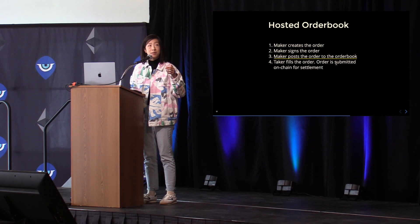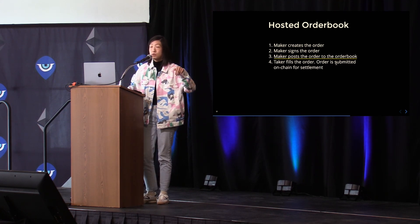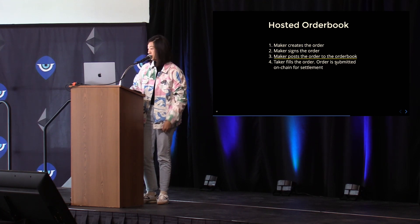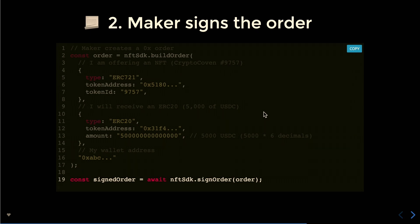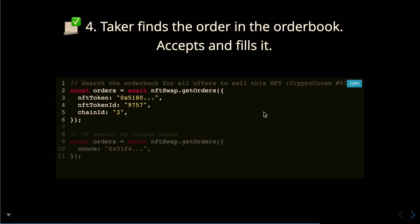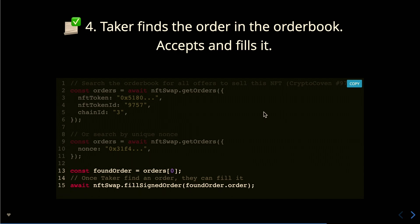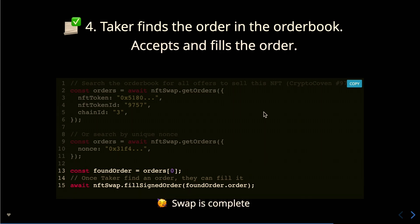Posting on an order book is quite straightforward — we follow those same three steps. The maker creates the order, signs it, and then uses the post order method. From there, the taker will look through the order book to find an order they're interested in — searching by certain criteria, or if they know the specific order, they can just put in that nonce. Once the order is found, they fill it, and then it's swapped.